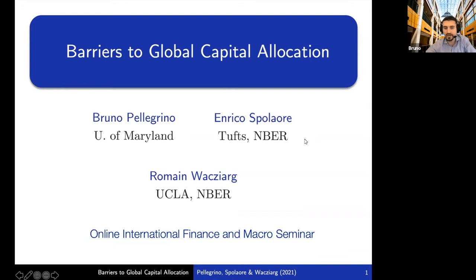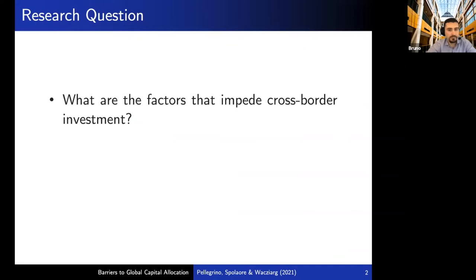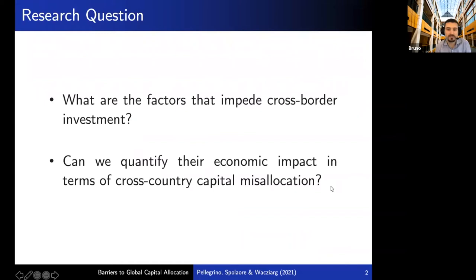The research question that we want to address with this paper is fairly straightforward. First, we want to ask: what are the factors that impede cross-border investment? And second, can we somehow quantify their impact in terms of cross-country capital misallocation?